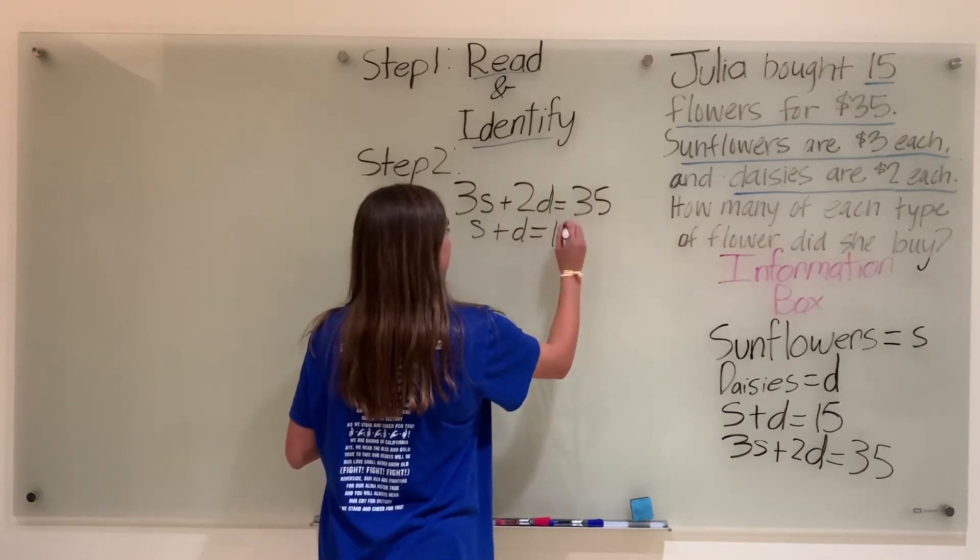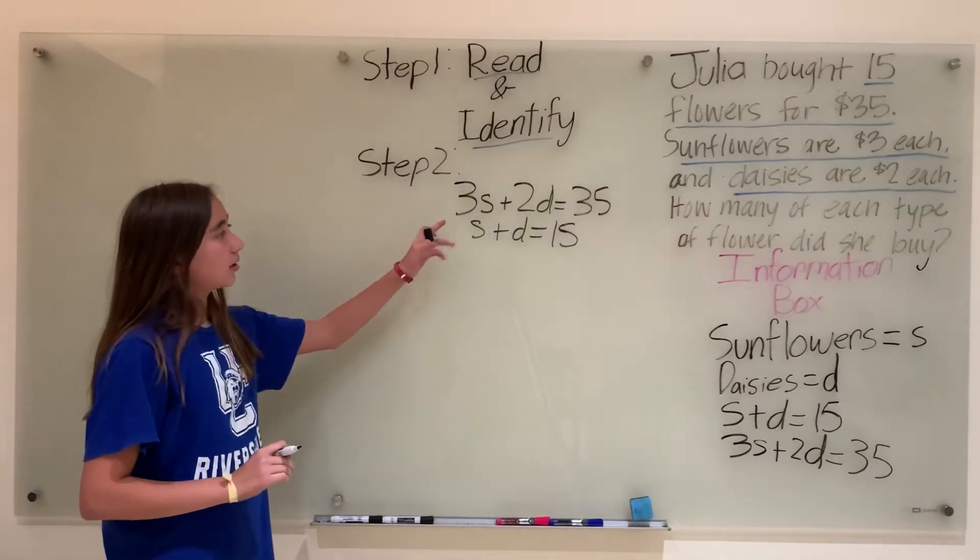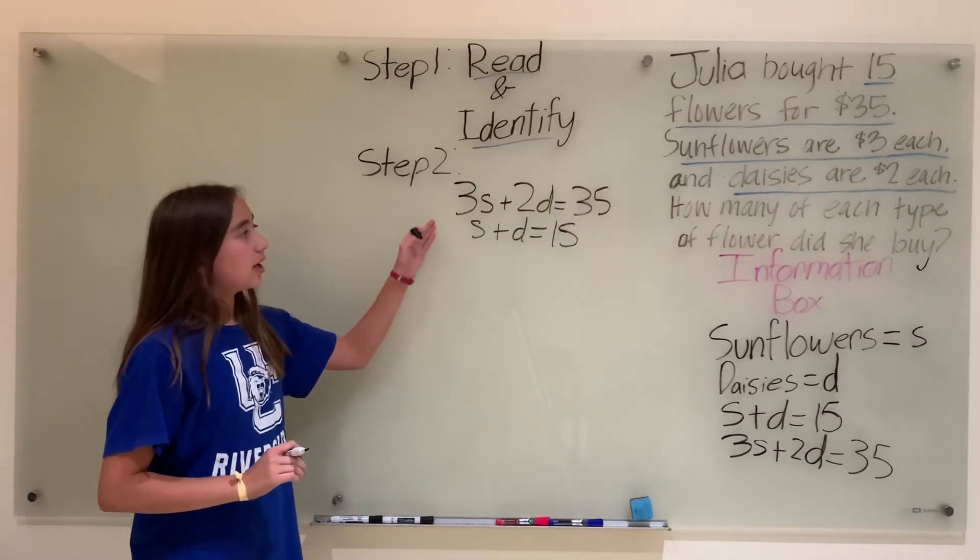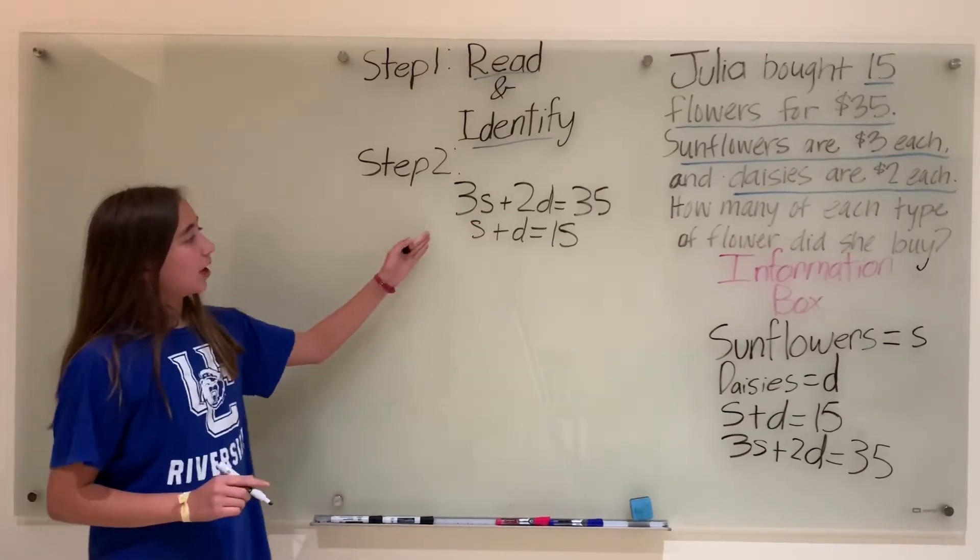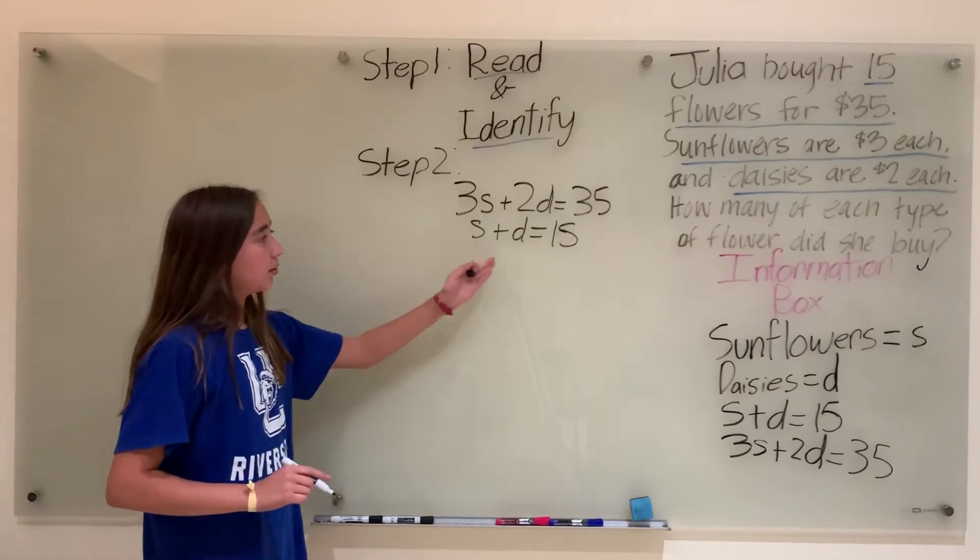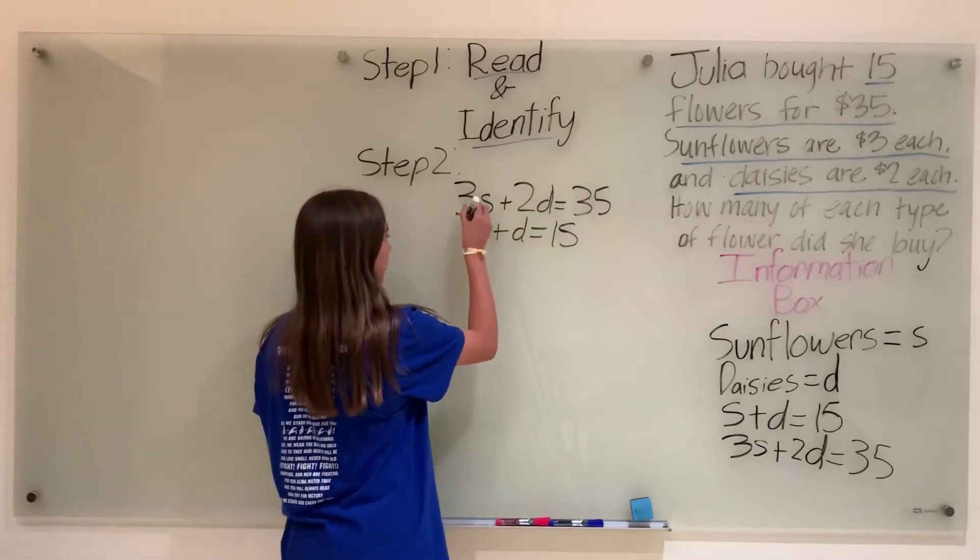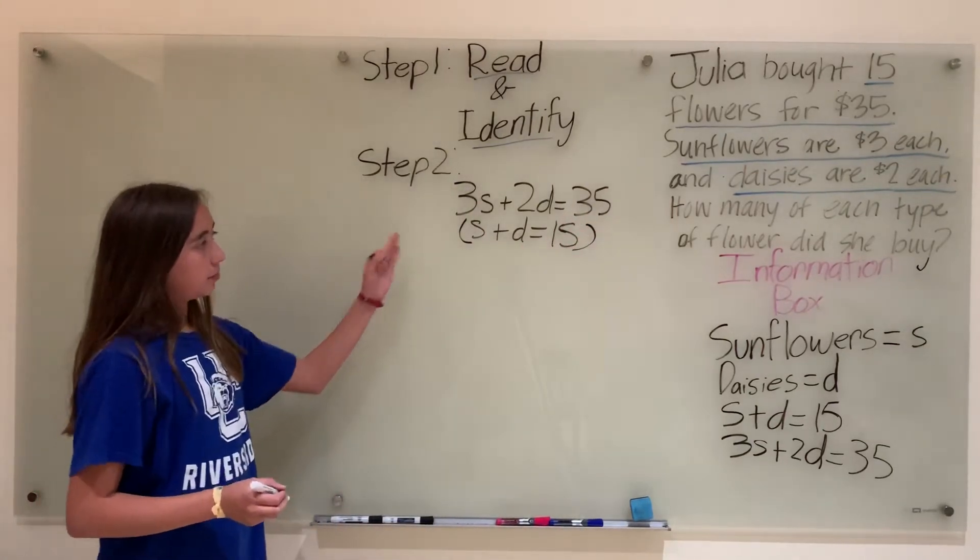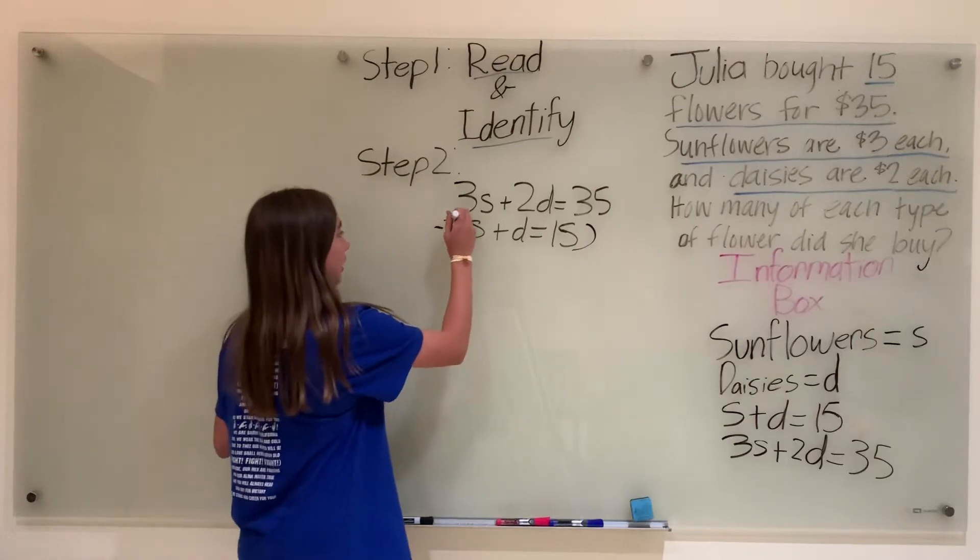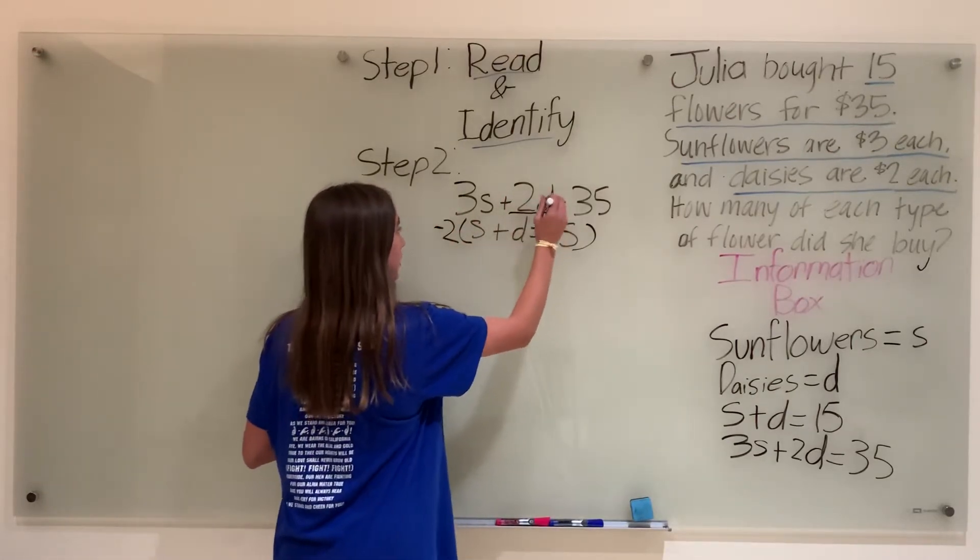So as you look at the equations, you're probably wondering how am I going to eliminate a variable if neither of these match up? What you can do is multiply one of the equations that doesn't match up by a number, preferably the smallest number, which is 2. And to make it match up even better, you add a negative sign so that they cancel out, eliminating variable d.